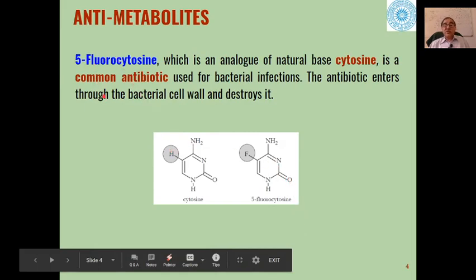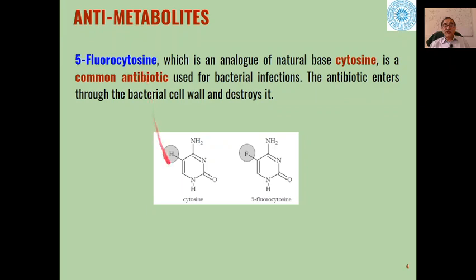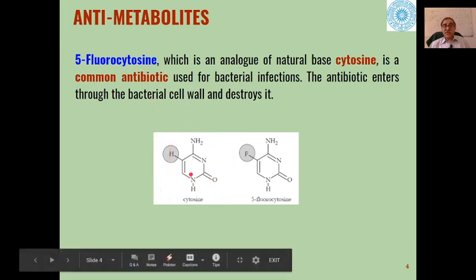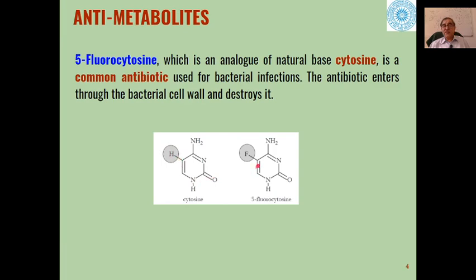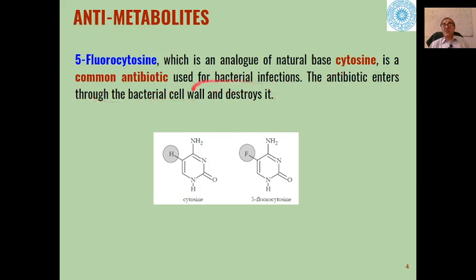Another example is 5-fluorocytosine. Cytosine has hydrogen at position 5; replacing it gives 5-fluorocytosine, which is similar in size and shape to cytosine. This acts as an analog of cytosine and is a common antibiotic used for bacterial infections — it enters through the bacterial cell wall and destroys it, another example of an antimetabolite.